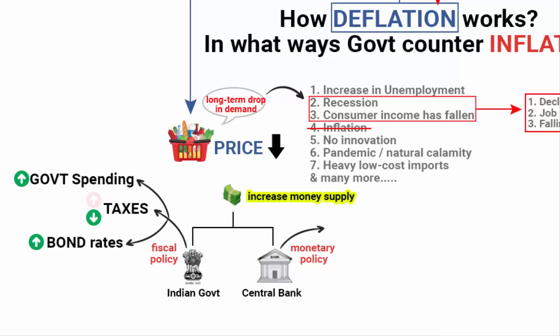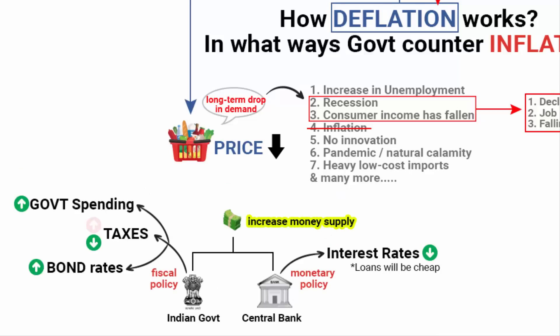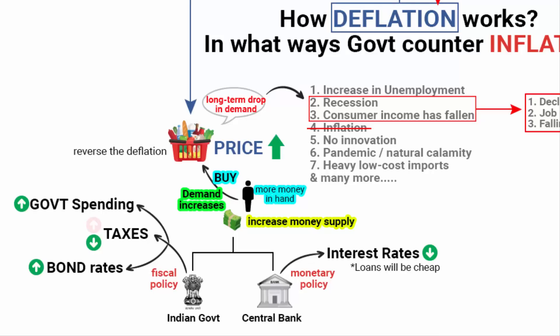Likewise, the central bank decreases the interest rate. The idea is that by increasing the money supply, the government wants people to have more money in their hands to spend. This way, people will stop waiting for prices to fall further, and that increases demand. Businesses also expand, more jobs are created, and the moment demand increases, prices go up — and that is how you reverse deflation.